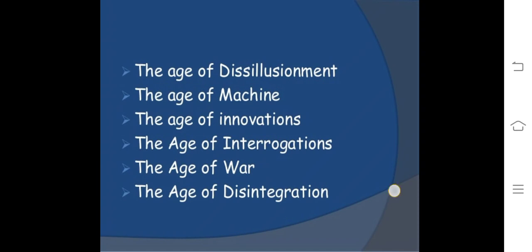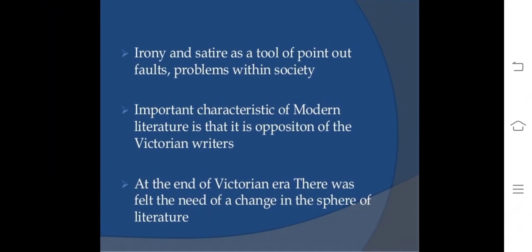Irony and satire were used as tools to point out faults and problems within society. An important characteristic of modern literature or modern poetry is that it is in opposition to Victorian writers. At the end of the Victorian era, there was a felt need for change in the sphere of literature.